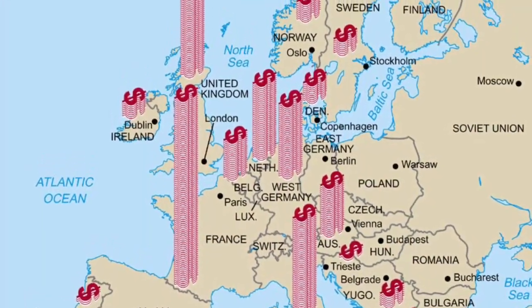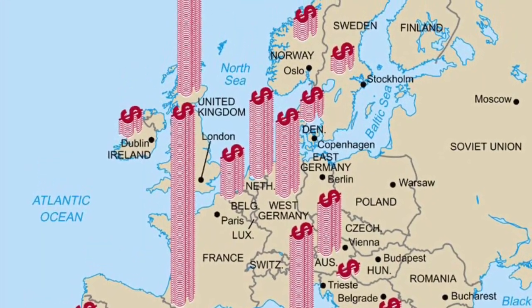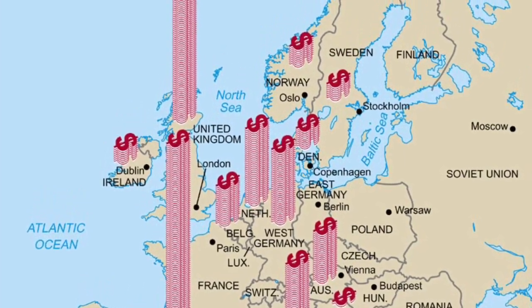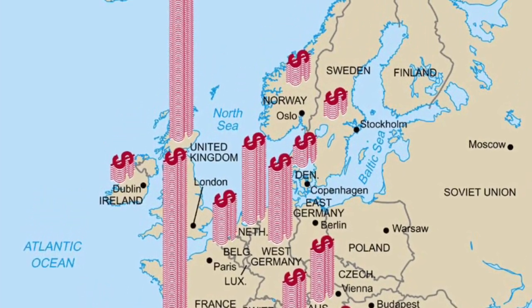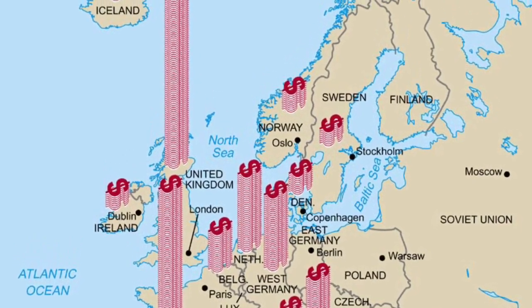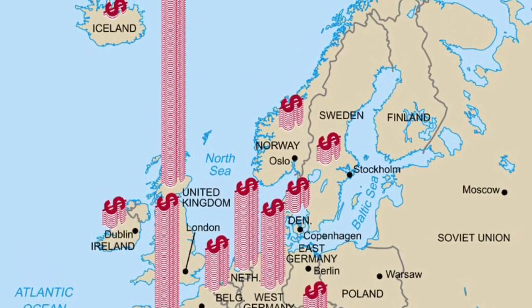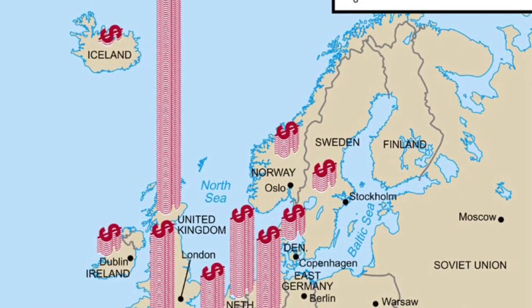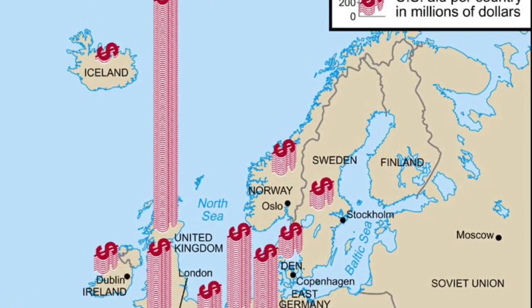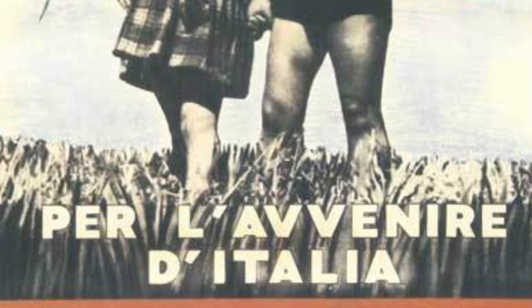The Marshall Plan was accepted by 16 Western European countries and in total about $13 billion was distributed by the Americans. Marshall Plan aid was an important factor in the recovery of those European countries economically, and also it helped prevent the spread of communism within Europe. There were significant communist parties in some of those Western European countries like France and Italy, but capitalism and democracy were maintained in large part due to the European recovery programme.